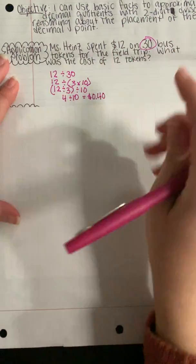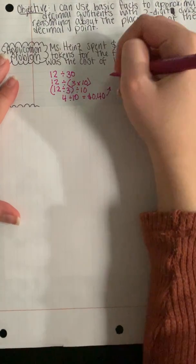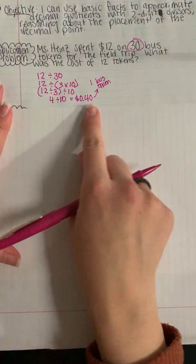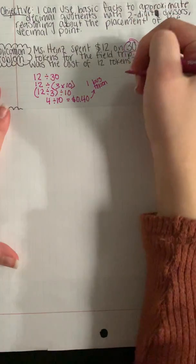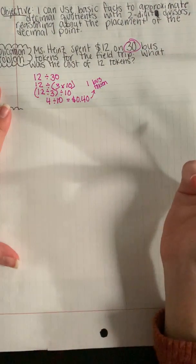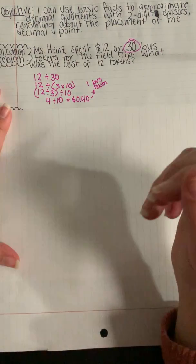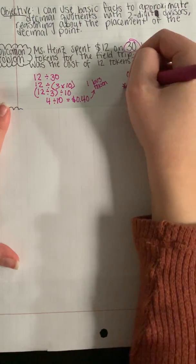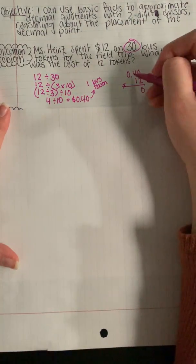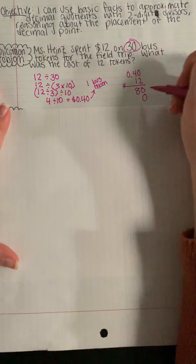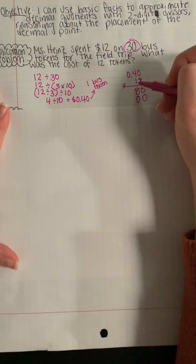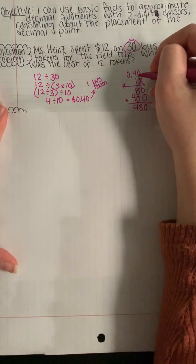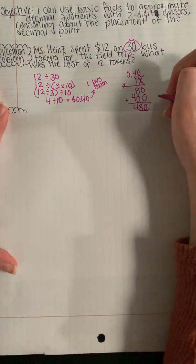So now that I know how much she spent on one bus token, I can figure out how much she spent on 12. So I'm thinking if one bus token was 40 cents, I need to know how many dollars and cents she spent on 12 units or 12 tokens. So that's gonna be multiplication. I'm gonna set up 0.40 times 12. And so 2 times 0 is 0, 4 times 2 is 8, 2 times 0 is 0. Now I'm working in the tens place. 1 times 0 is 0, 4 times 1 is 4.